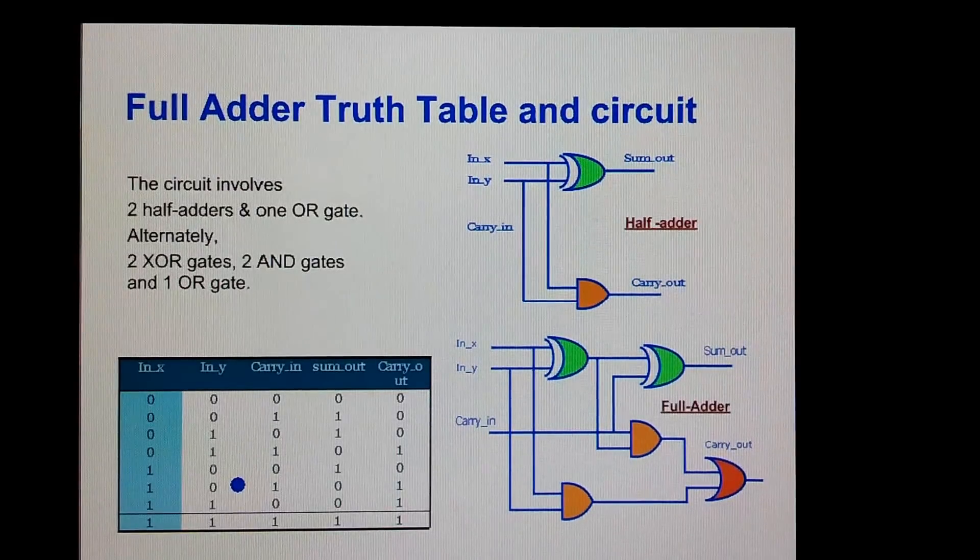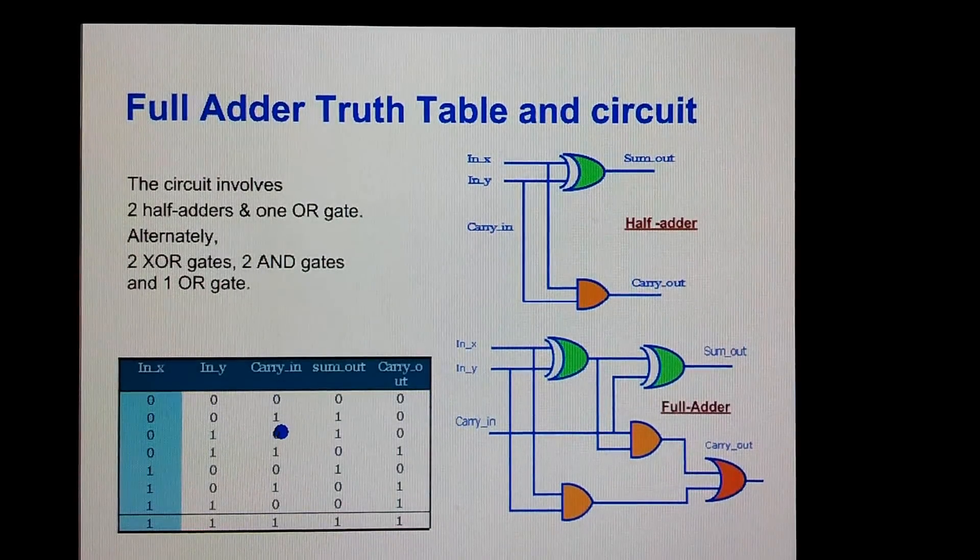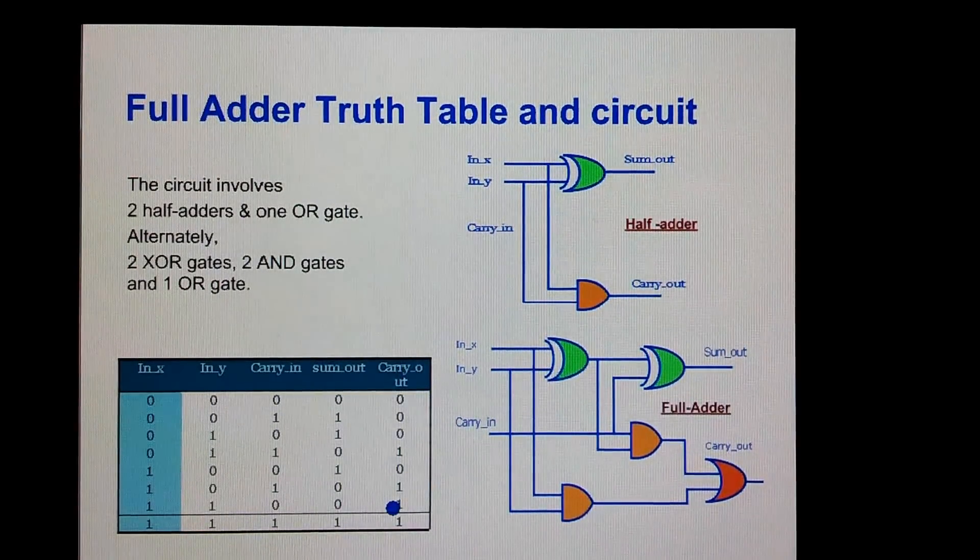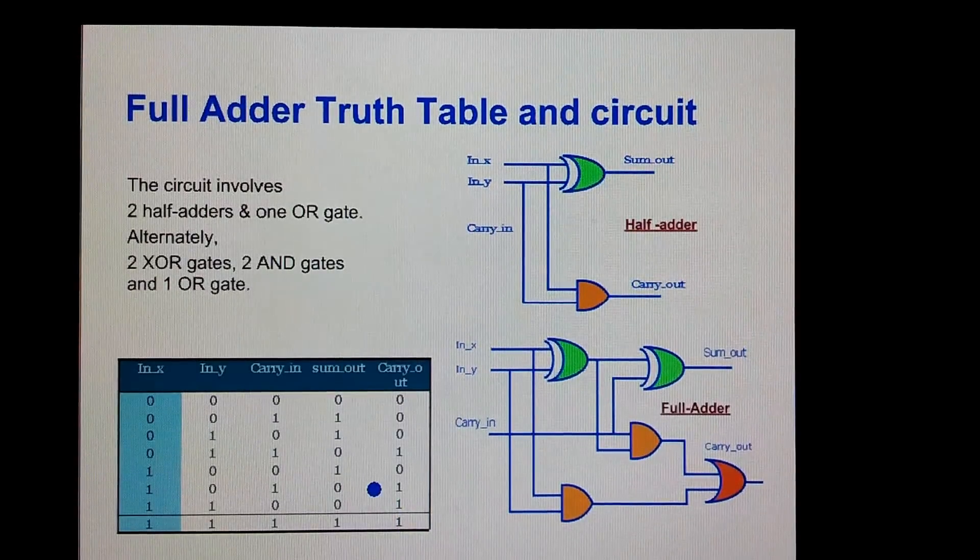The truth table is here where we have two inputs A and B and carry in. We get the sum and carry out. You can review this.